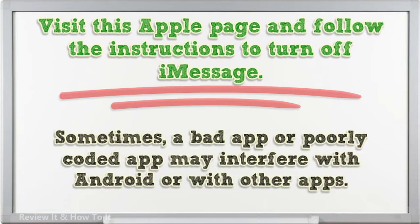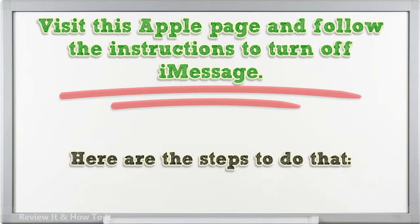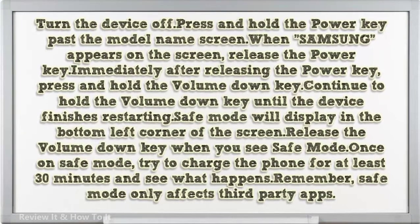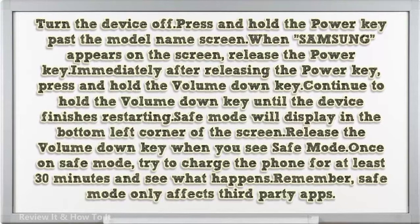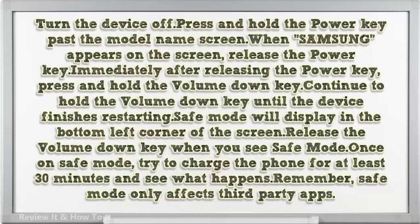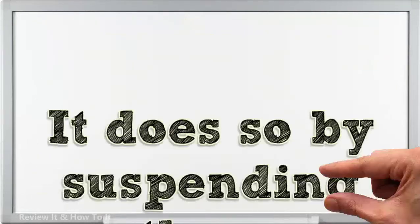Check for a bad third-party app. Sometimes a bad or poorly coded app may interfere with Android or with other apps. To check if there's a third-party app that blocks text messages, run your S10 in safe mode. Turn the device off > press and hold the power key past the model name screen > when Samsung appears on the screen, release the power key > immediately press and hold the volume down key > continue to hold until the device finishes restarting. Safe mode will display in the bottom left corner of the screen. Once in safe mode, try to receive texts for at least 30 minutes and see what happens. Safe mode only affects third-party apps by suspending them.